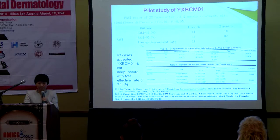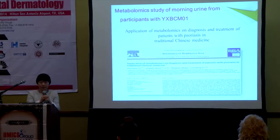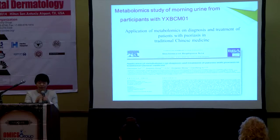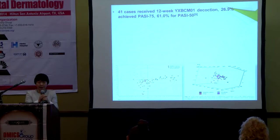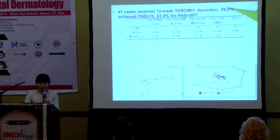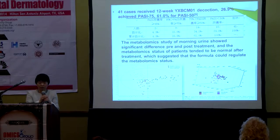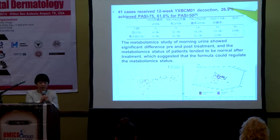That is a very positive result. In order to review the metabolic trends after treatment with this formula, we conducted a clinical study among 41 cases. They received a 12-week Yinxieling CM01 decoction, and we found 26.9% achieved PASI 75 and 61% achieved PASI 50. The metabolomics study of morning urine showed significant differences pre- and post-treatment, and the metabolic state of patients tended to normalize after treatment, suggesting the formula can regulate the metabolism of patients.